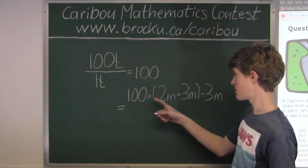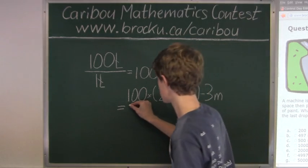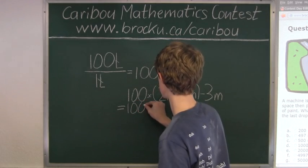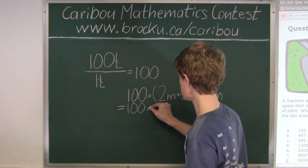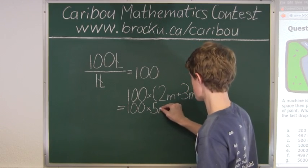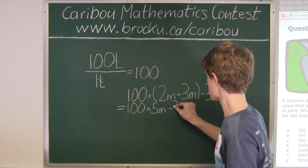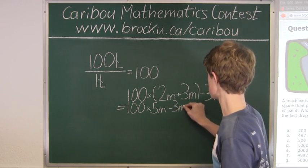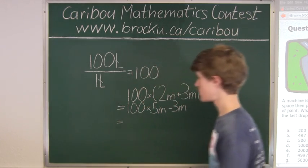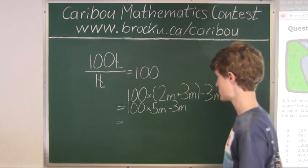Now we have 100 times 2 meters plus 3 meters is 5 meters, and then minus the 3 meters. So we have 100 times 5 meters which is 500 meters minus 3 meters.